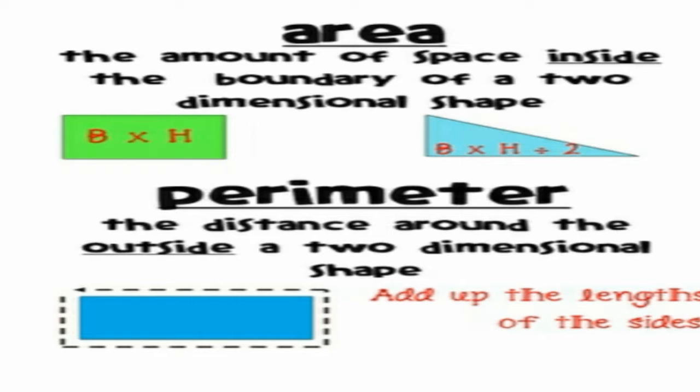Let's listen again. Area: it is the amount of space that covers the surface. If there is any shape, whatever the space is covered inside the boundary — that covered amount inside the shape's boundary — will be the area.